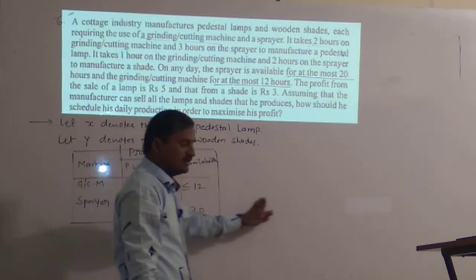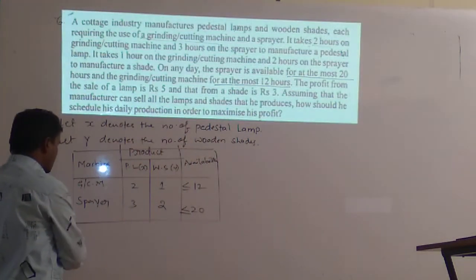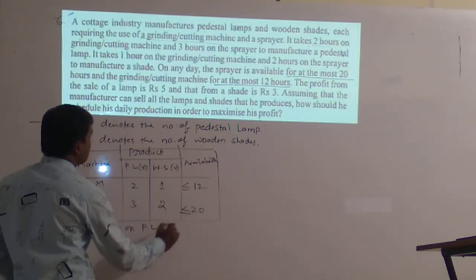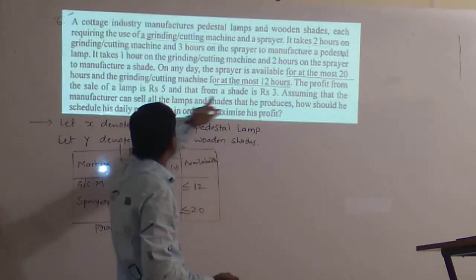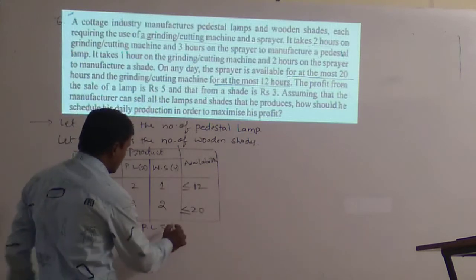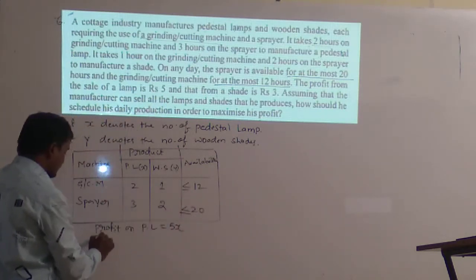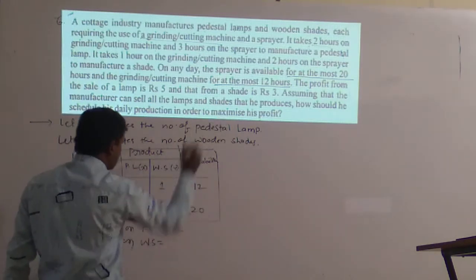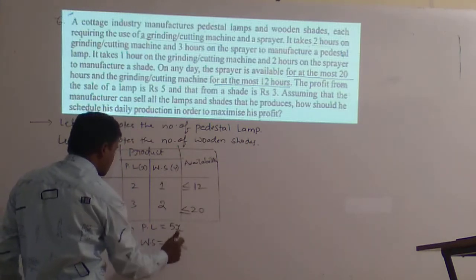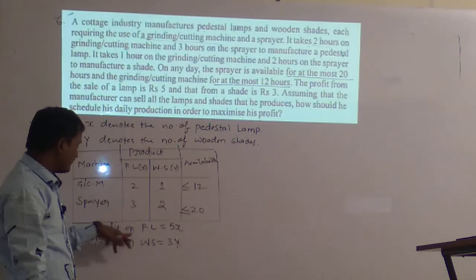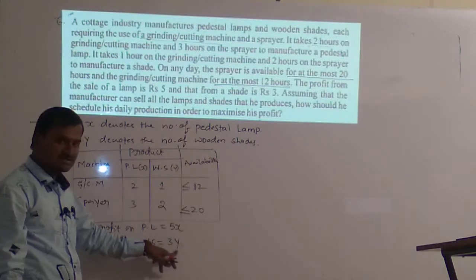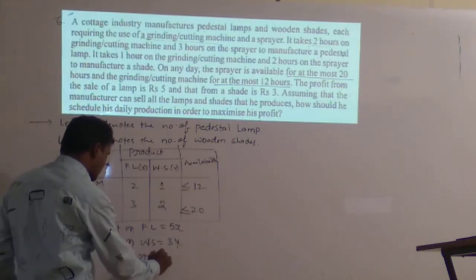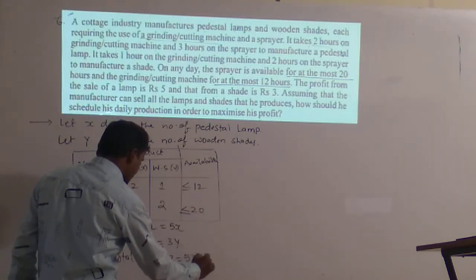We have to write the objective function, so we take the profit. Profit on pedestal lamp is 5 rupees, so that becomes 5x. Profit on wooden shade is 3 rupees, so that becomes 3y.